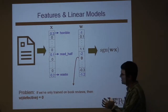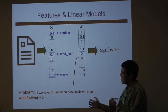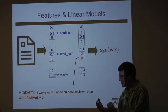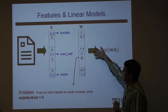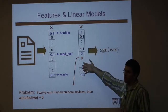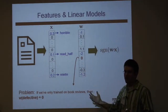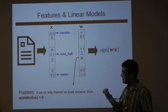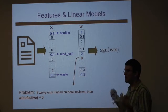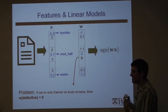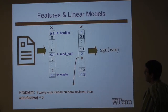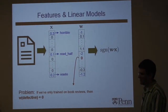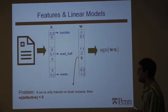The problem is: we had a feature like 'defective,' and we had training data from books on which we can estimate the weight vector. But we've never seen the word 'defective.' The best we can do is give it a zero weight — we don't know what it means. In practice, this isn't going to help us when we get to kitchen appliances.